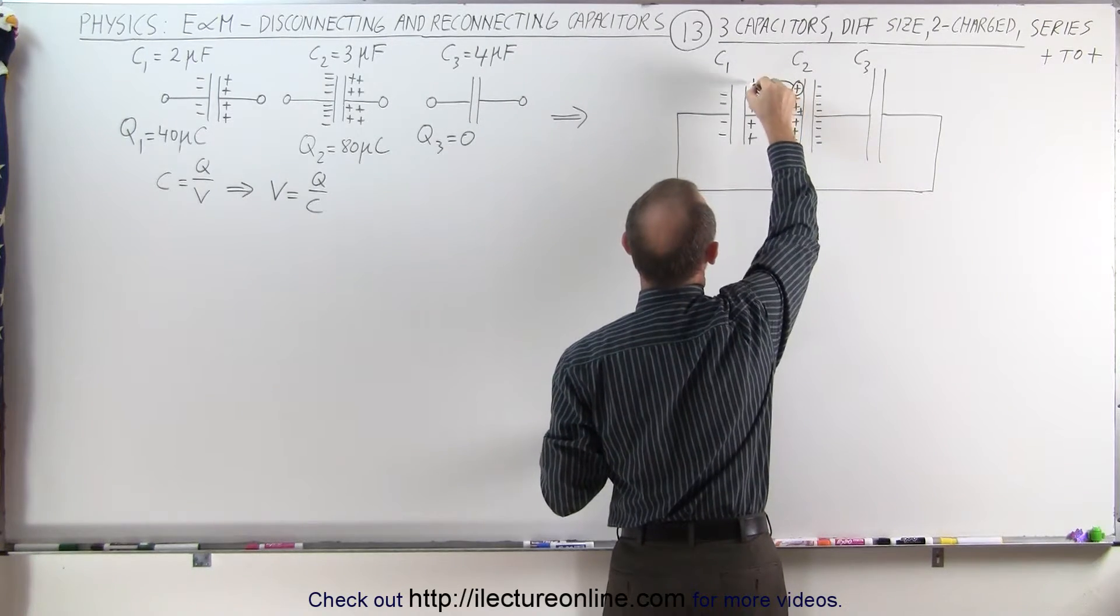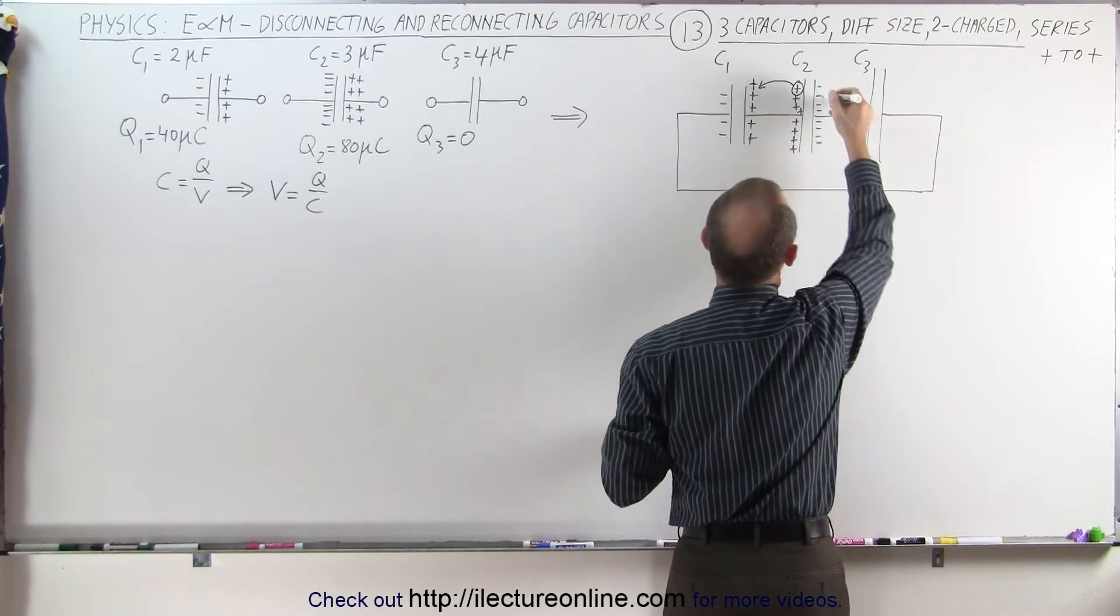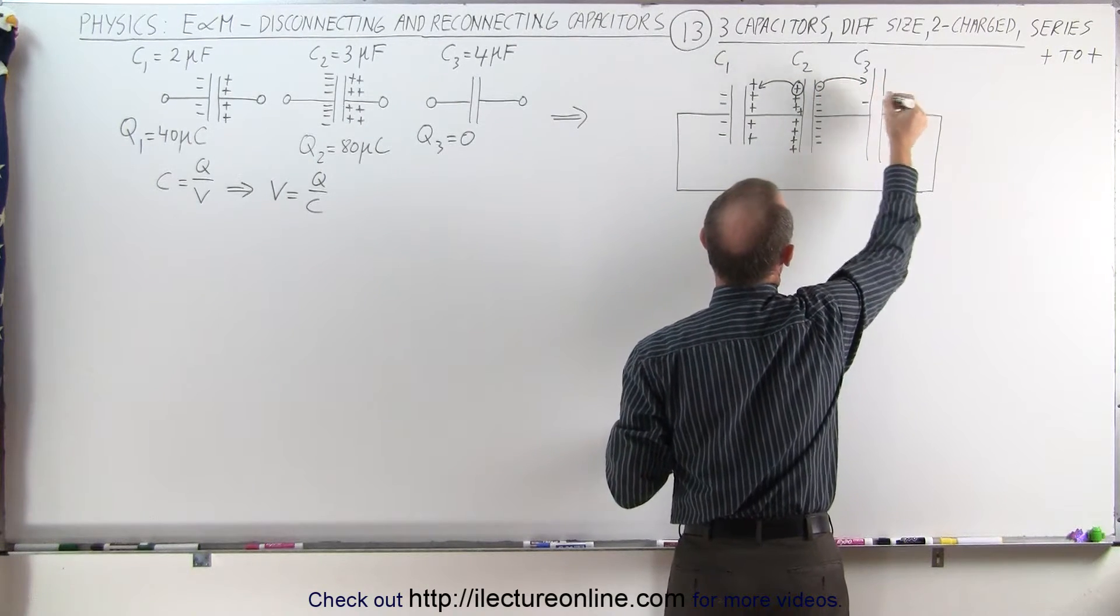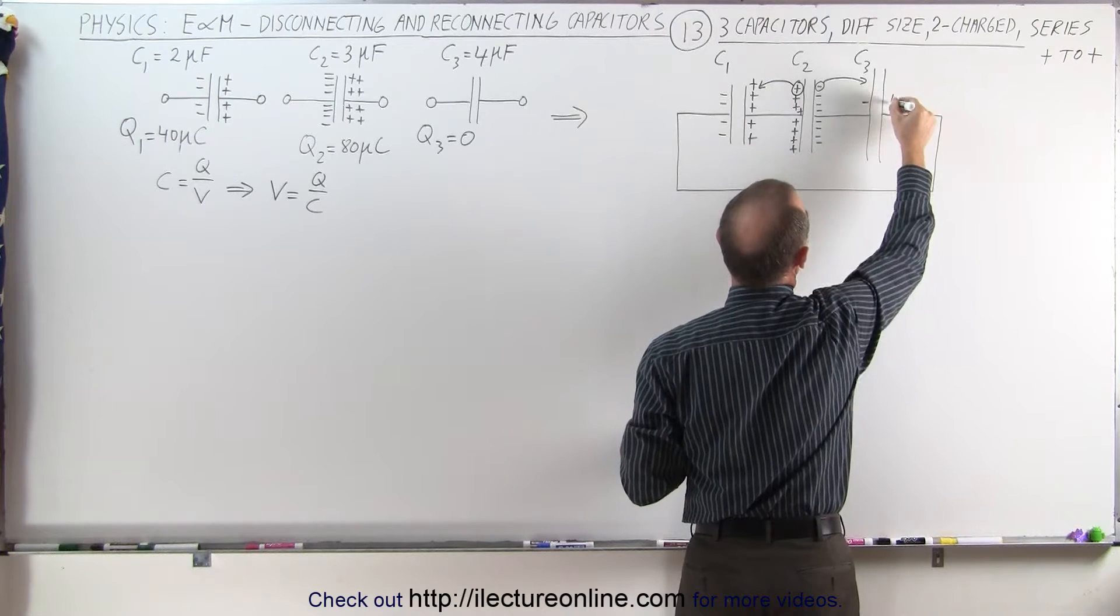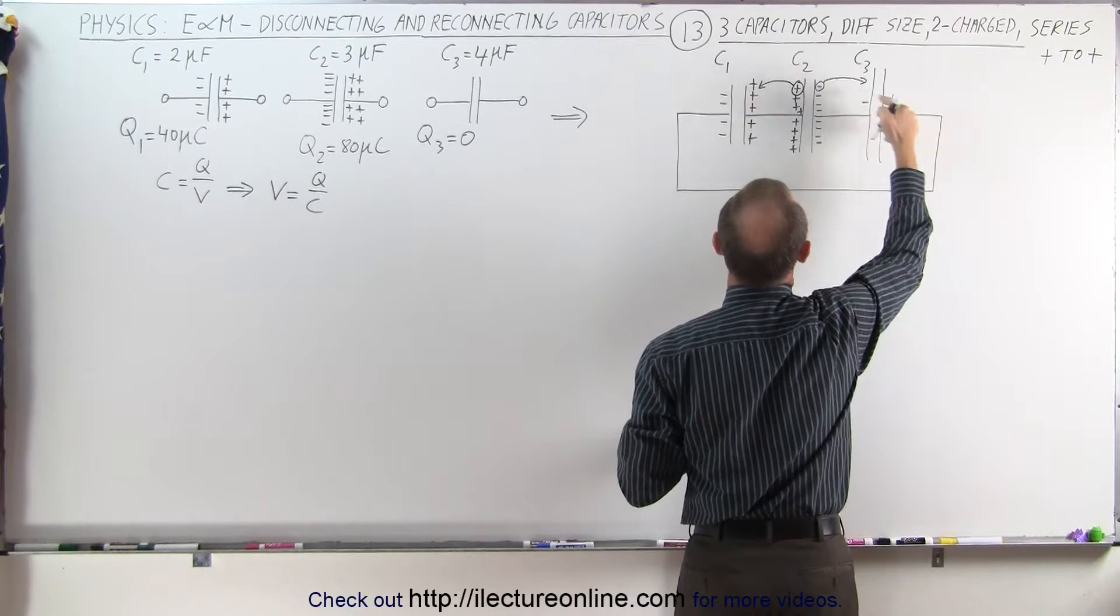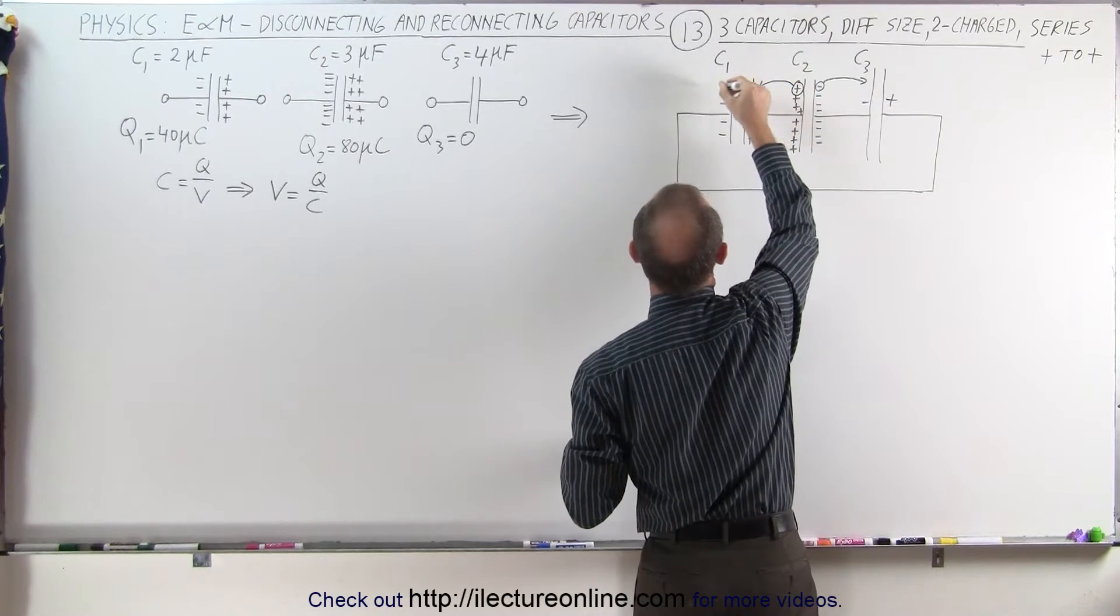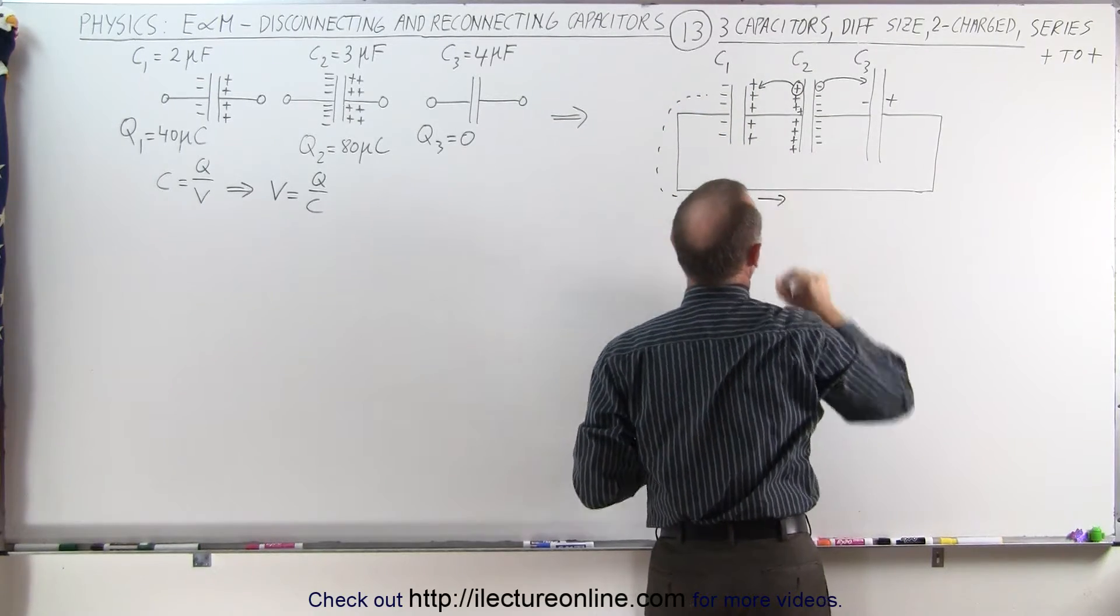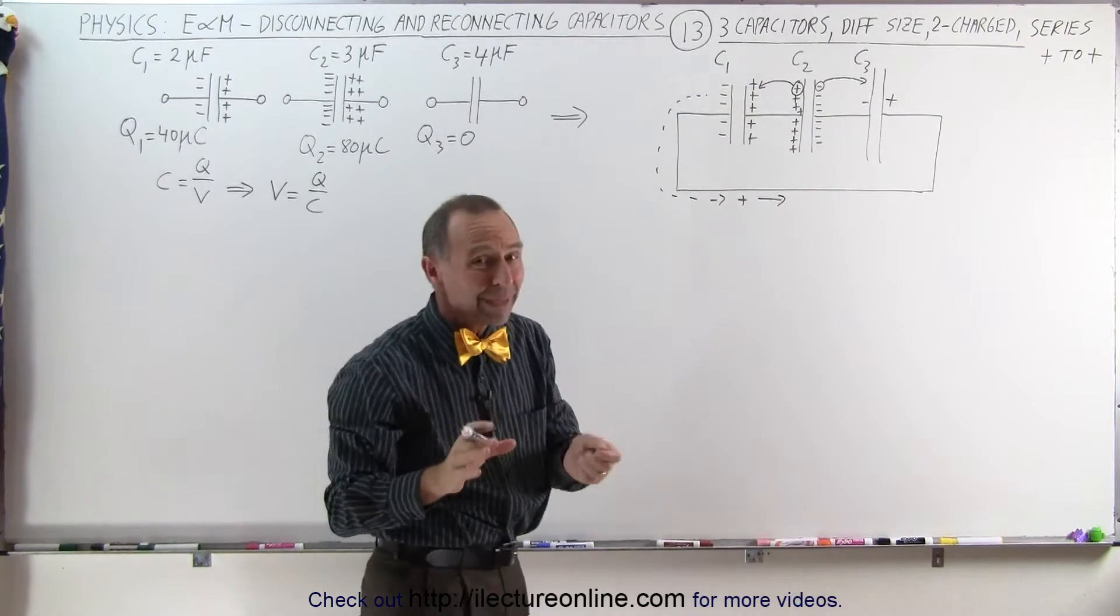When that happens, we have an extra charge over here, which means that this charge is going to move over in that direction, adding a negative charge over here, causing a positive charge to appear over here, which came from the positive charge that moved in this direction around the circuit. And that's what we're expecting to happen.